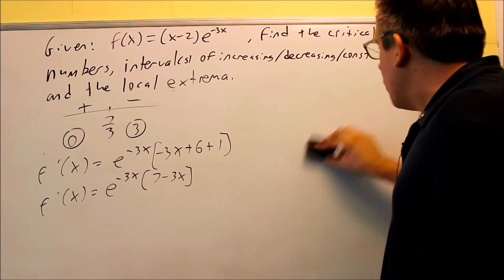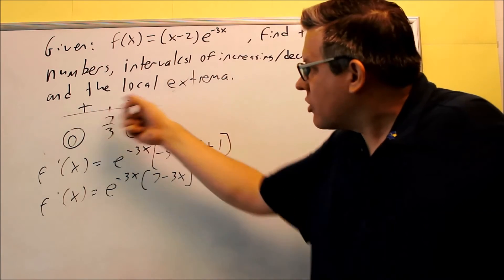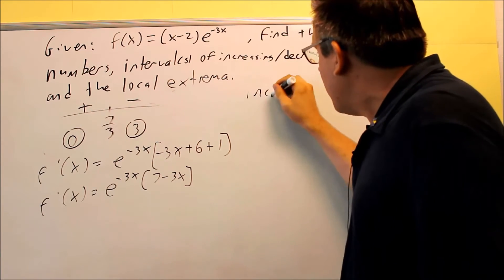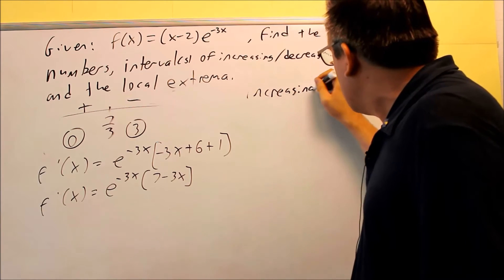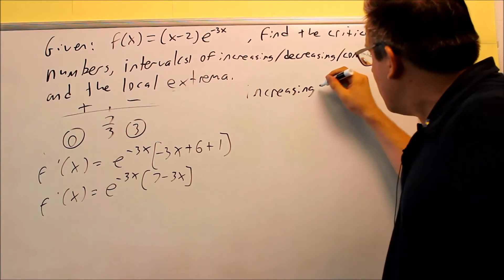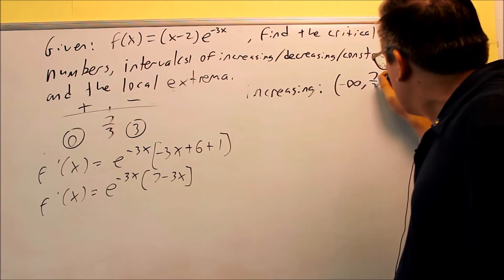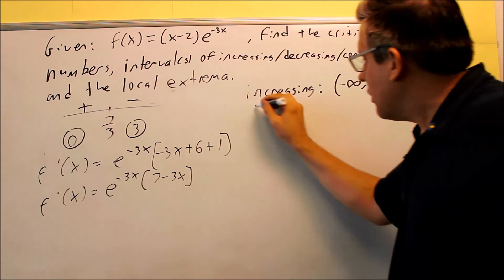So from this we can make our conclusion here as far as increasing and decreasing since we have that complete. For increasing, you're going to look for the places on your chart where you have a positive. So increasing is going to be from negative infinity to 7 thirds.